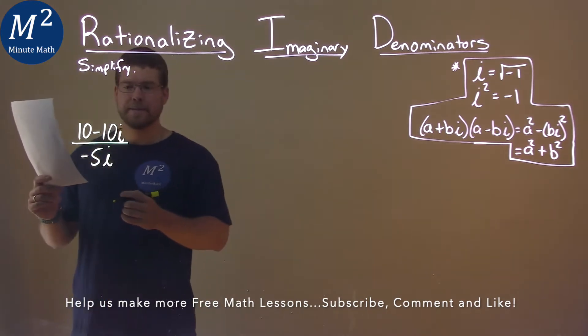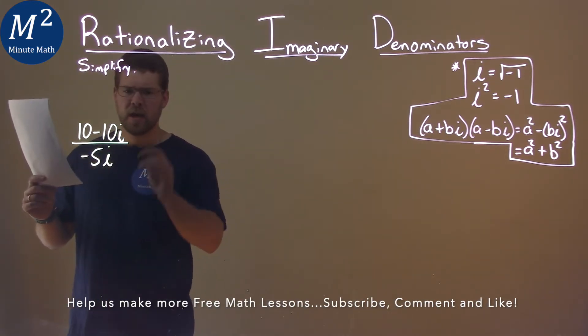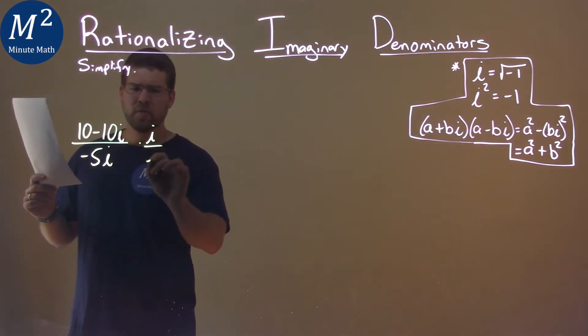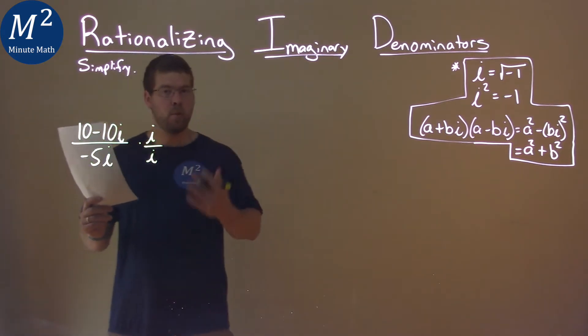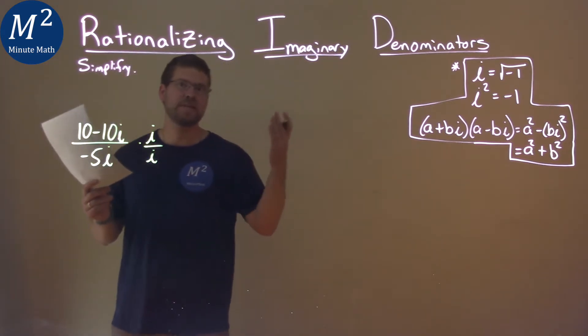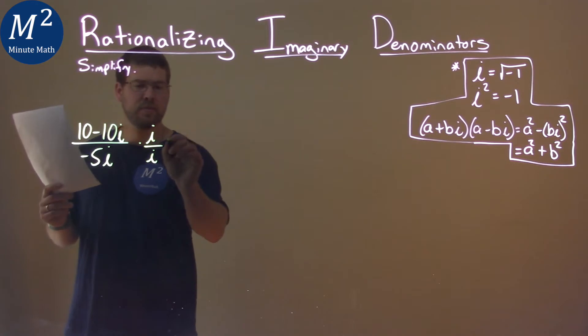The main thing I'm looking at here is, if I multiply this by i over i, I multiply it by 1. And I know that this will eventually get i out of the denominator, so let's go see that.